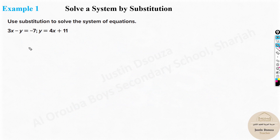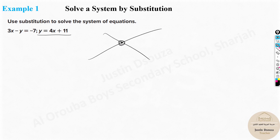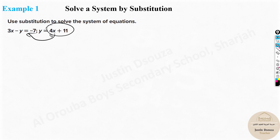We have two equations here. Look at both of them — which do you think is the easier one? Is it 3x minus y equals negative 7, or the other equation? I feel the second equation is arranged more conveniently: y equals 4x plus 11. I already know what the y value is. We need to solve these two, meaning we need to find where they are equal to each other. At that particular point they are equal, so I will substitute this y expression into the first equation.